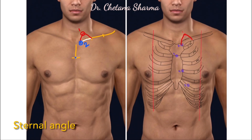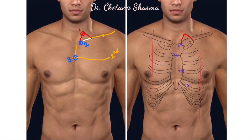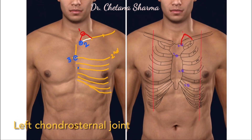Mark the midpoint of the sternal angle as point number three. If you continue to palpate this sternal angle horizontally towards the left, you will feel the 2nd costal cartilage. Below the 2nd costal cartilage, you can palpate further costal cartilages like 3rd, 4th, 5th, 6th, 7th, and 8th. Now mark point number four on the left 4th chondrosternal joint.